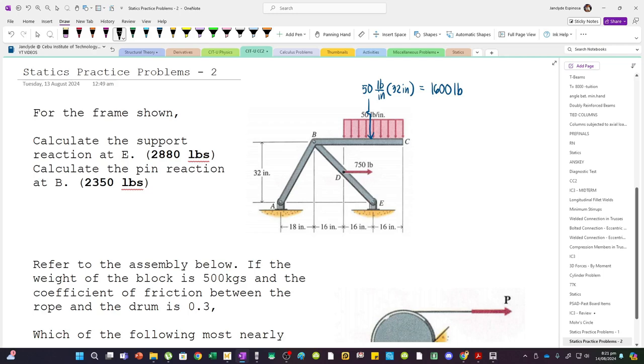After this, we can sum up moments. Let's just sum up moments about A, so we can get the value of EY. Because, once we have EY, we can separate this member. That's easier.